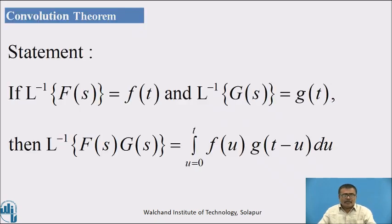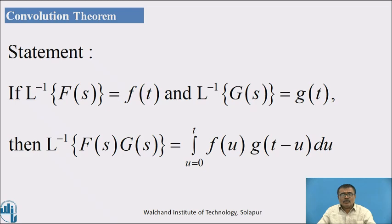Convolution Theorem — Statement: If L⁻¹{F(s)} = f(t) and L⁻¹{G(s)} = g(t), then L⁻¹{F(s)·G(s)} = ∫₀ᵗ f(u)·g(t − u) du.